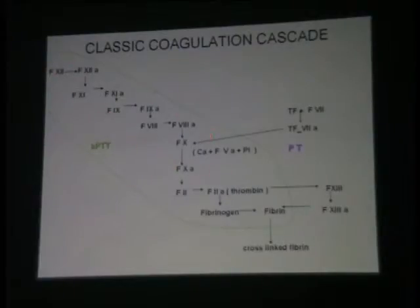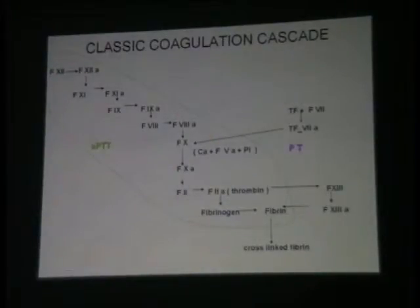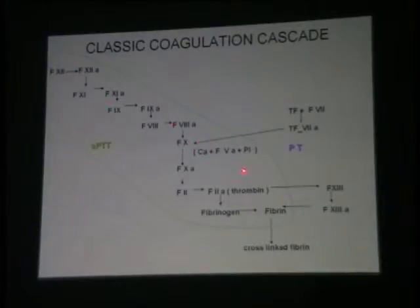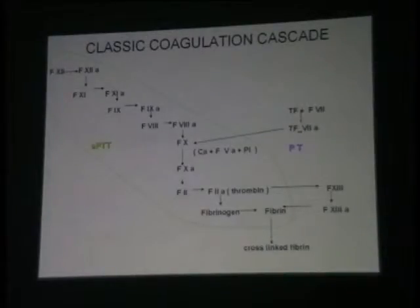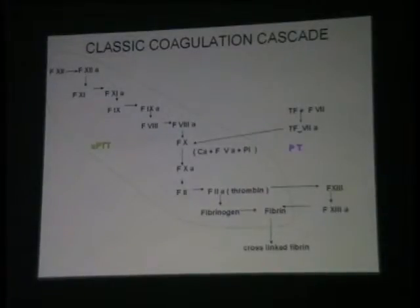If APTT is normal, you can imagine all your clotting factors are present and working. All your clotting factors are present and working if your APTT is normal, except factor 7, which is outside the review of your APTT reagent — that factor being prothrombin.